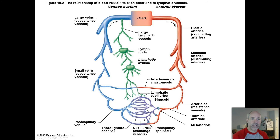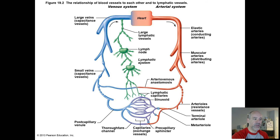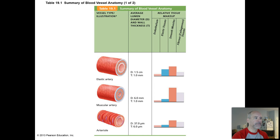Capillaries are microscopic blood vessels that are just one cell thick — the walls are just one cell thick, very, very small. That's where you have your fluid exchange between the blood and your tissues, with all the nutrients moving out and waste products being picked up into the blood so it can carry them away and eliminate them from your body.